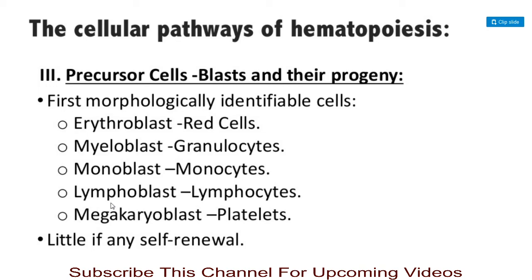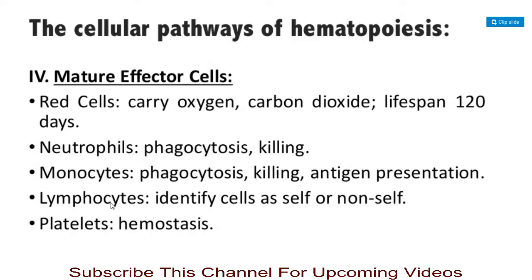Precursor cells have little if any self-renewal. The mature effector cells include: red cells, which carry oxygen and carbon dioxide with a lifespan of 120 days; neutrophils, which perform phagocytosis and killing of pathogens; monocytes, which perform phagocytosis and antigen presentation; lymphocytes, which identify self vs. non-self; and platelets, which are involved in hemostasis or blood clotting.